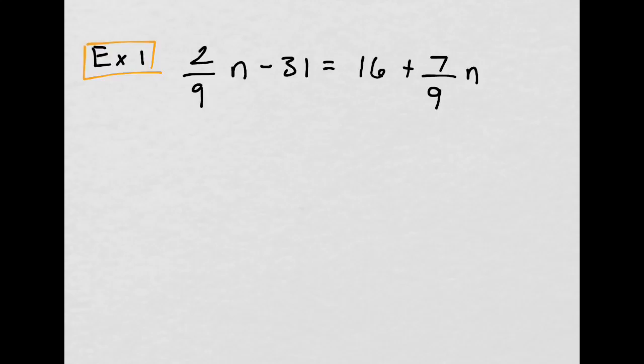The main idea here is to get the variables to one side and the numbers to the other. In this case, we have a fraction, so I'll get rid of the fraction at the very beginning. The numbers will get kind of big, but if you don't want to deal with the fractions, then it's something that you can do.